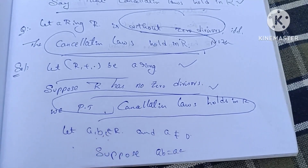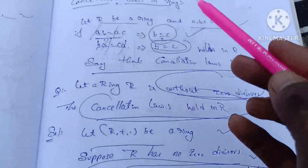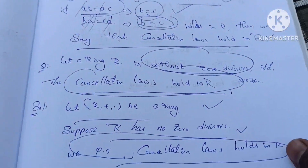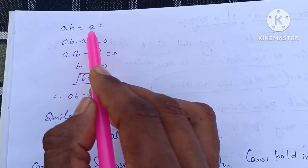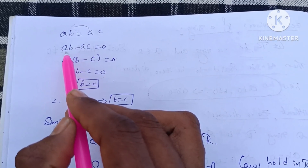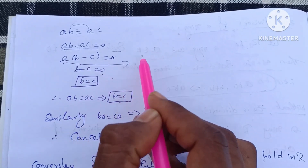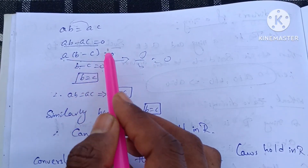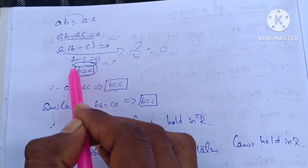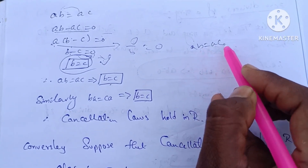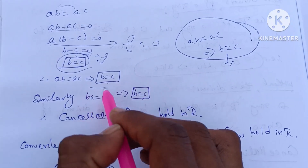Let AB equal AC. We need to prove B equals C. Suppose AB equals AC, then we can write A times (B minus C) equals zero. So B minus C equals zero, meaning B equals C. We cancel the last term, and that gives us the cancellation law.